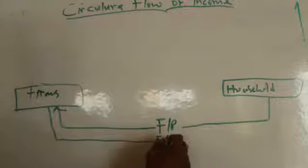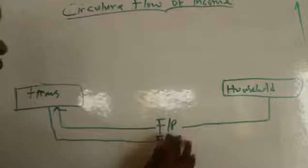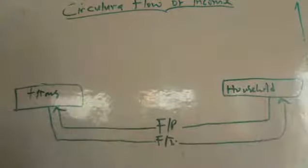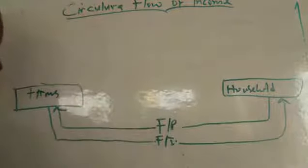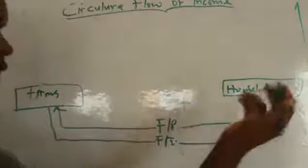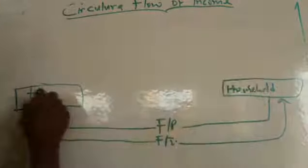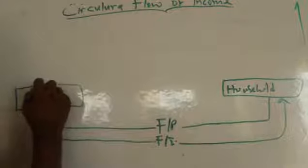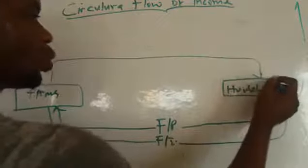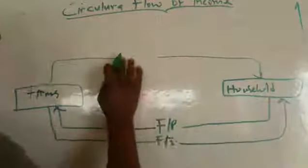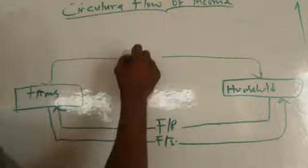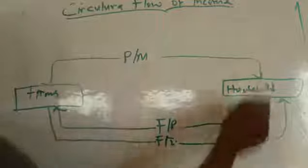That payment is factor income. So money is now in the hands of the household. The household will use that money for a few things. The first is to consume the goods produced by the firms, because the goods produced here will be supplied to the household through the product market. The household must then pay back to the firms.